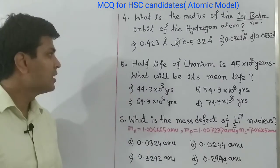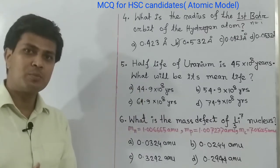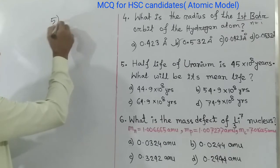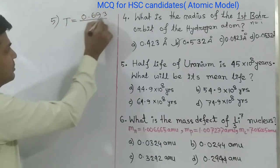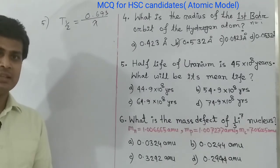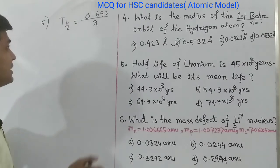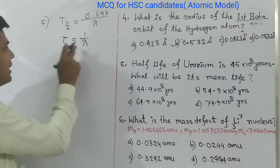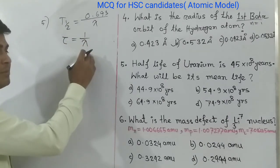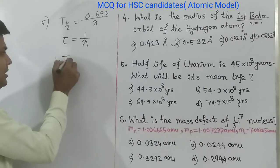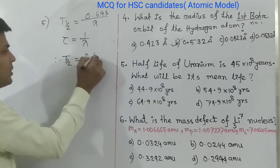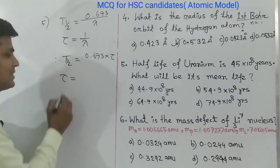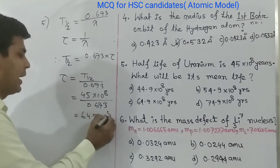MCQ 5: The half-life of uranium is 4.5 into 10 to the power 9 years. What will be its mean life? Using t half equals to 0.693 divided by lambda, and the relation tau equals to 1 by lambda, we can write t half equals to 0.693 into tau. Solving for tau, the mean life tau equals to 6.49 into 10 to the power 9 years. The correct option is C.